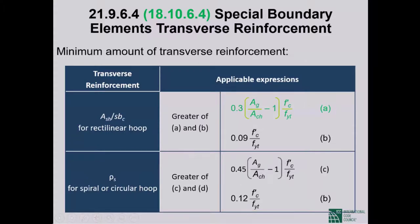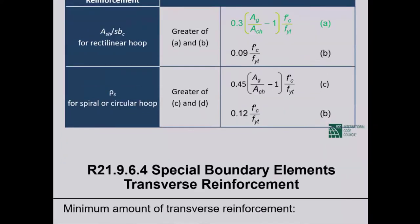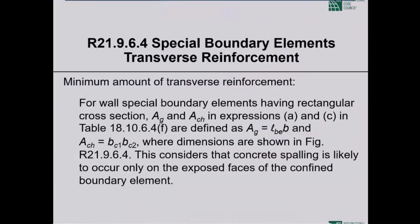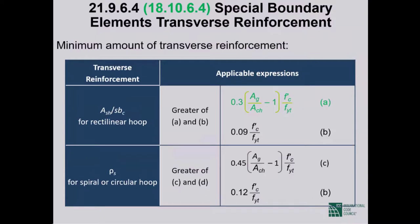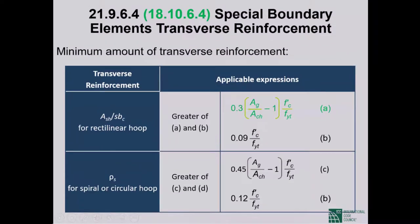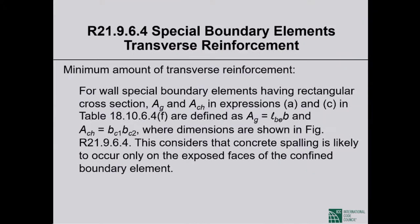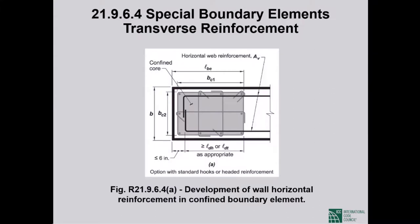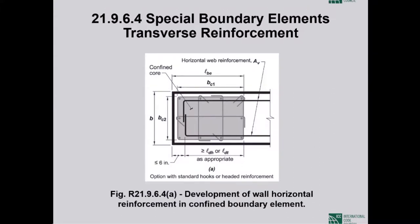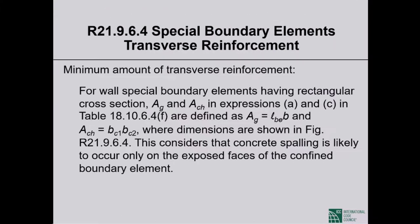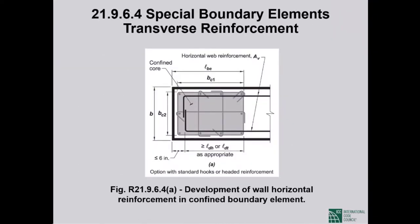ACI 318-14 has restored the first formula. To use it, you need the gross cross-sectional area and the confined cross-sectional area of the boundary element — A sub G and A sub CH — which can be determined from the commentary figure and text. This is 2014 material and need not be applied under the current BNBC 2020 framework.